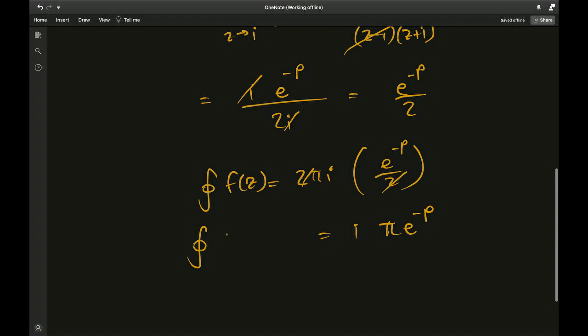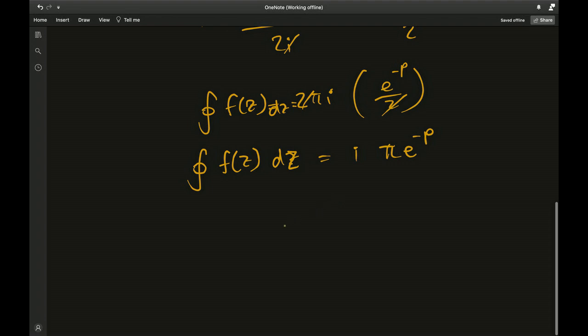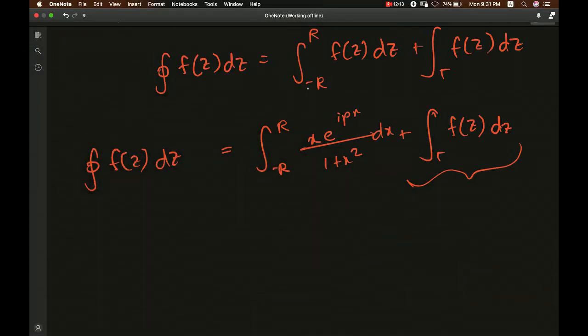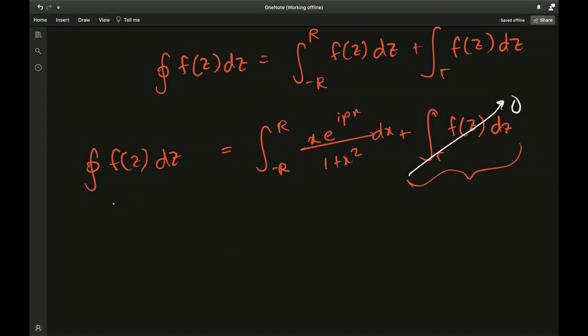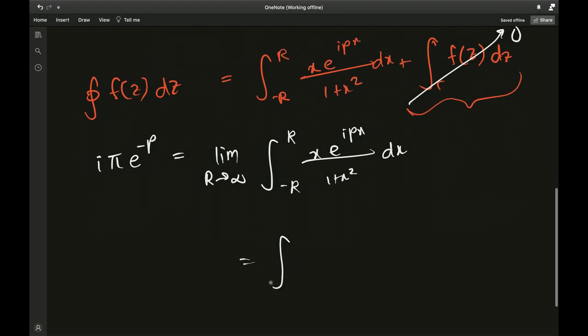Now let's see the bigger picture. We know each element now: the integral over gamma went to 0, we know the contour integral value. Let's plug everything back into our main equation. We know this goes to 0, we know the value of this is i pi times e to the negative p. Since we took the limit as r goes to infinity, we have integral from minus infinity to infinity of x times e to the ipx over 1 plus x squared dx equals i times pi times e to the negative p.